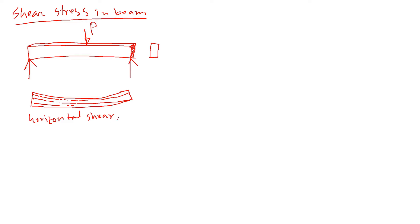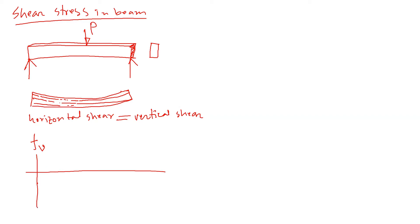Now in an earlier concept we have seen that this horizontal shear is the same as the vertical shear. This vertical shear formula that we are going to develop is expressed using V. If we draw the shear force and bending moment diagram for this section, if this is P, it's going to go up P here like that.